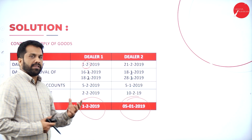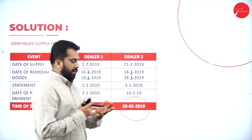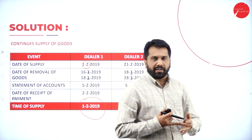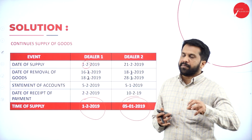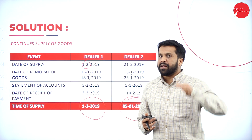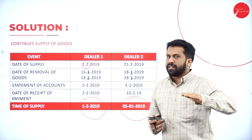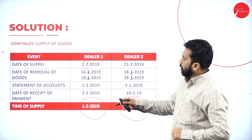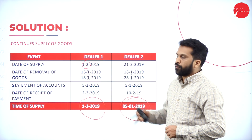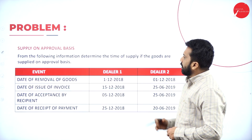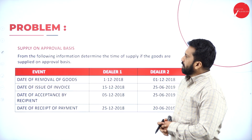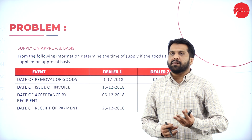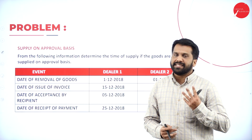These are all calculations for continuous supply. Out of the invoice date, supply date, and date of payment, we compare all and whichever is earlier, we consider as the time of supply. Now I'll go to supply on approval basis.